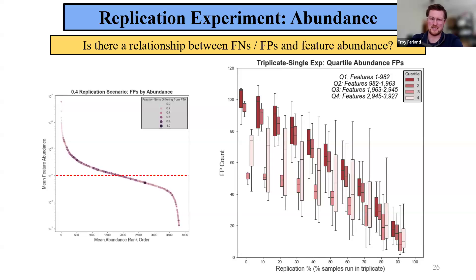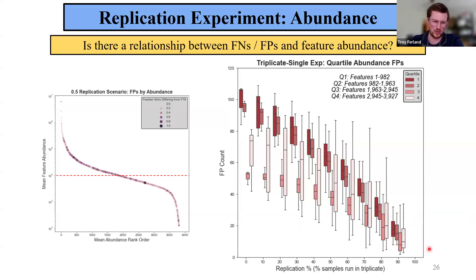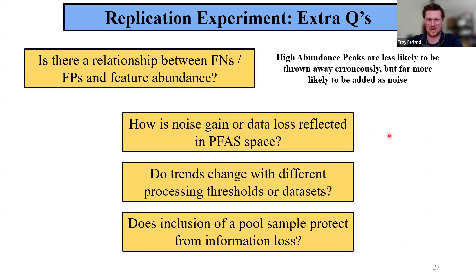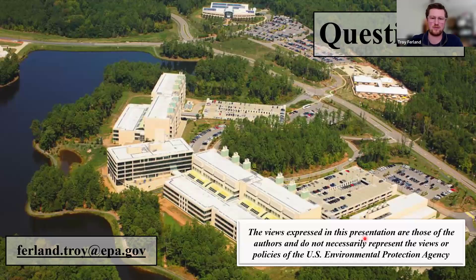We're far more likely to lose something we should have kept if it's a larger feature. Based on likelihood of manual review, people focusing on the first and second quartiles may encounter even fewer false negatives than expected. The distribution for false positives is different: if something's large and originally removed from the data, it's far more likely to be incorrectly included. High abundance peaks are less likely to be thrown away but far more likely to be added as noise. Future questions being actively pursued include looking at specific compound classes like PFAS, whether trends hold in different datasets, and whether a pooled sample can protect from information loss when reducing replication.